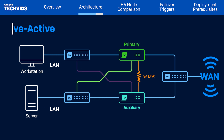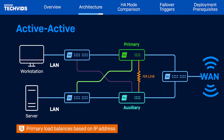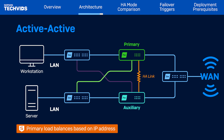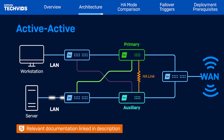In an active-active cluster, both devices process the network traffic. All requests go to the primary, which will load balance and forward traffic to the auxiliary device when needed. The primary device will process or forward the traffic based on whether the source IP address has an even or odd number. For further information about load balancing, refer to the linked documentation.